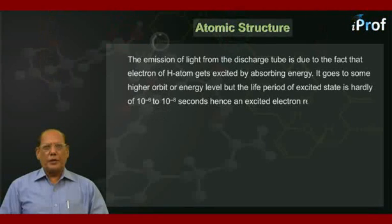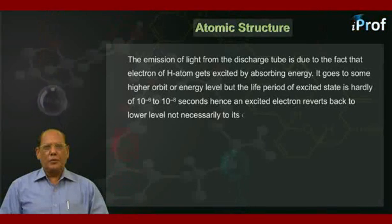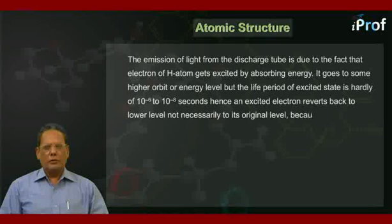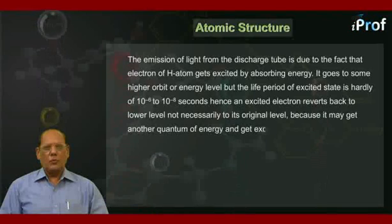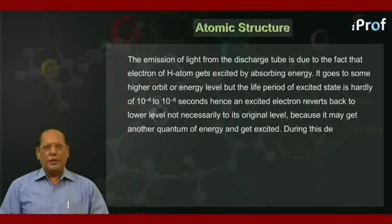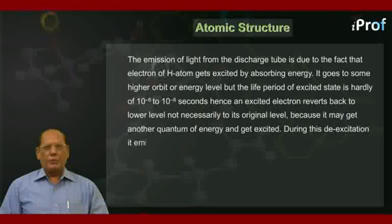Hence, an excited electron reverts back to lower level, not necessarily to its original level, because it may get another quantum of energy and get excited. During this de-excitation, it emits out the energy in the form of light.